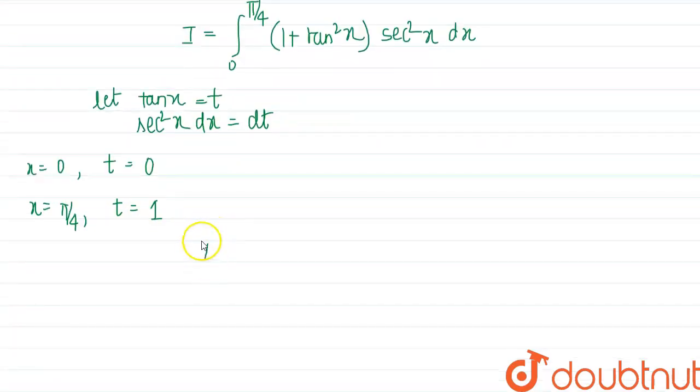So we can now change the integral. So I is equal to 0 to 1, 1 plus tan square x is 1 plus t square, into sec square x dx is dt.